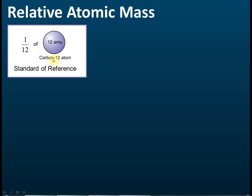In chemistry, the standard reference for relative mass is 1/12 of the mass of a carbon-12 atom. We define the mass of this carbon-12 atom as 12 amu, where amu stands for atomic mass unit. However, the standard reference is not the carbon-12 atom itself, but 1/12 of its mass. Since the carbon-12 atom's mass is 12 amu, 1/12 of 12 amu equals 1 amu.